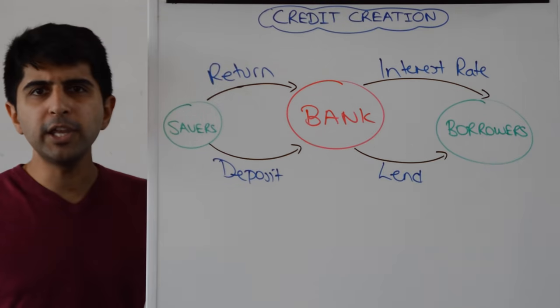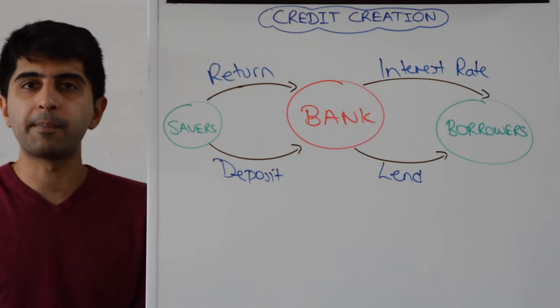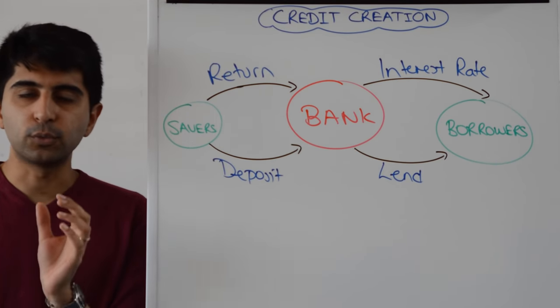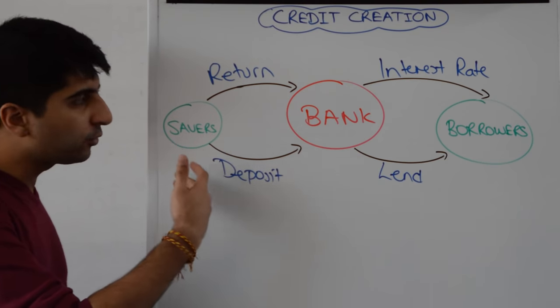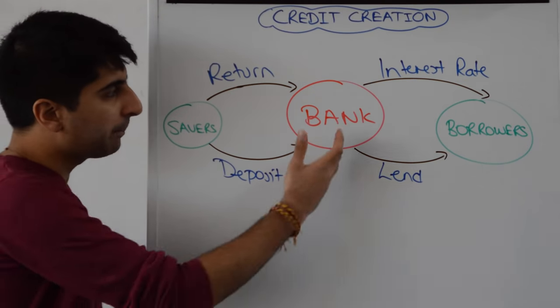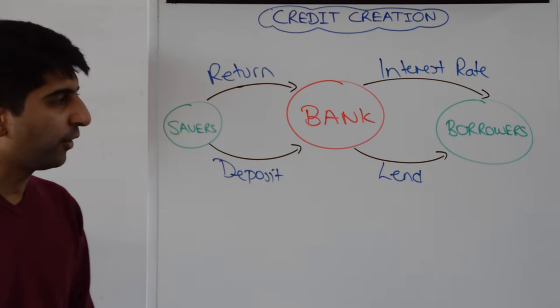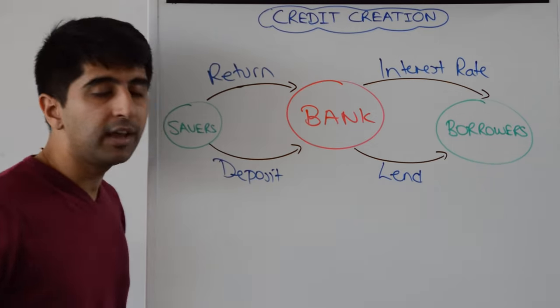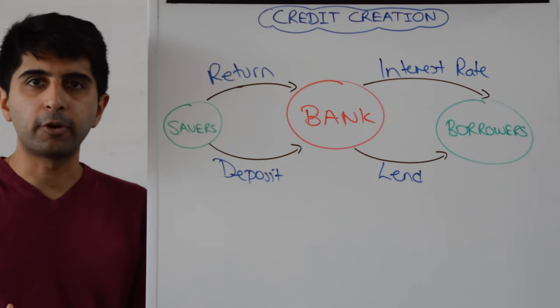So we have our bank in the middle there and we know that one of the key functions of a bank is to bring together savers with borrowers. Savers will deposit money in banks and will gain a rate of return back from banks as a result. Banks will then create loans from those savings and will lend to borrowers and will charge an interest rate to borrowers as a result.